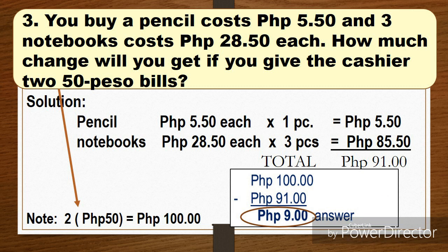So if you bought a pencil... note, a pencil means 1 piece. Okay, so 5 pesos and 50 centavos times 1 equals 5 pesos and 50 centavos. And then three notebooks, so we'll multiply by 3 pieces. 28 pesos and 50 centavos times 3 pieces equals 85 pesos and 50 centavos.